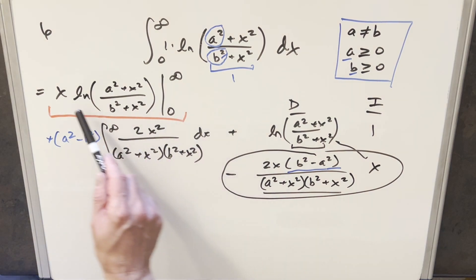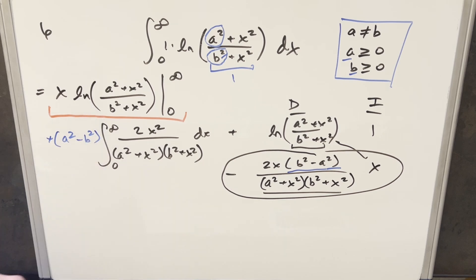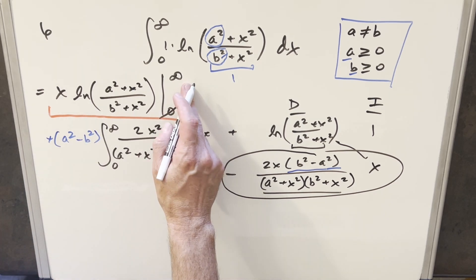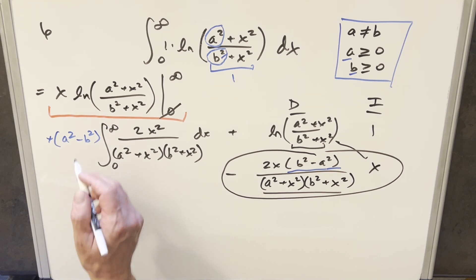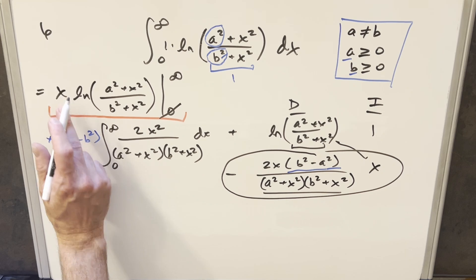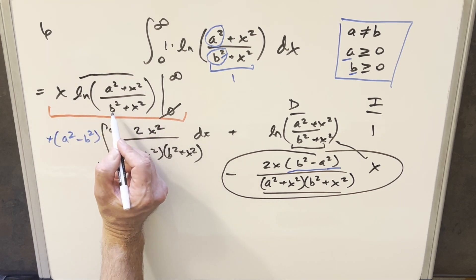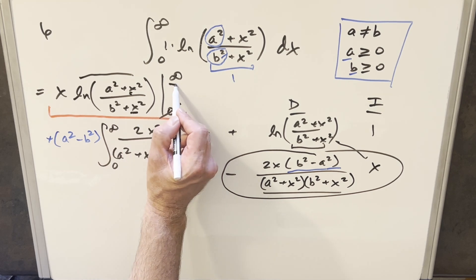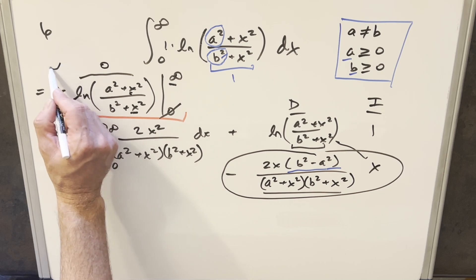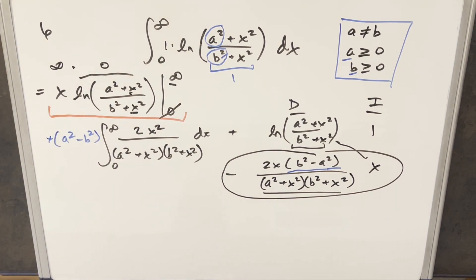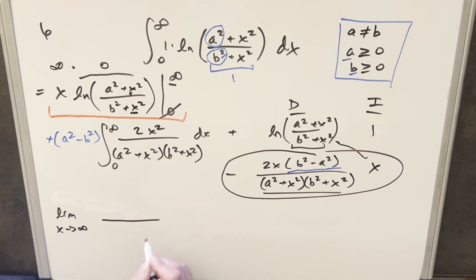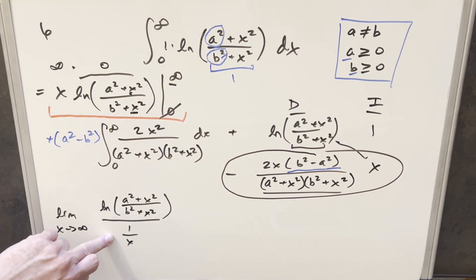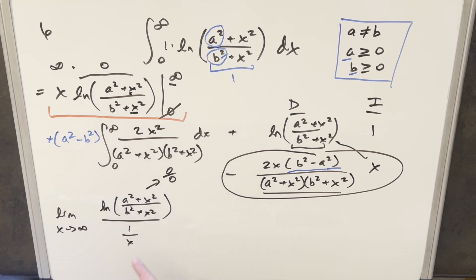When you evaluate at zero, you have a zero on the x, and the rest is mostly just a constant term, so we can ignore the zero case. The infinity case is a little more tricky. If you plug in infinity, the a squared and b squared are going to be insignificant compared to the x squared terms going to infinity, so this turns out to be natural log of 1, which is just zero. So we have an indeterminate form — infinity times zero. What I'll do is set it up for L'Hôpital's rule by bringing the x into the denominator, writing it as 1 over x. Then the natural log is in the numerator, giving us a zero over zero form.